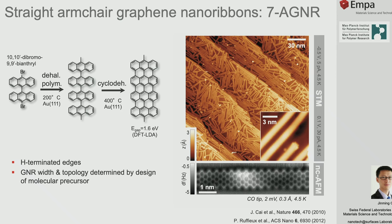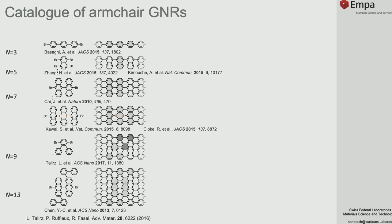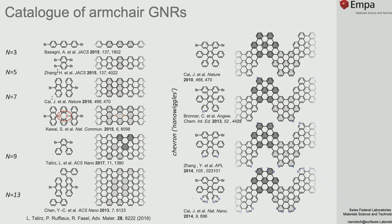After these first results from our laboratory, a huge amount of armchair nanoribbons appeared in the literature from different groups, including precise atomic doping. For example, work by Mike Crommie and Steven Louie on boron inclusion in seven-armchair nanoribbons, and armchair nanoribbons with chevron shapes with atomically precise nitrogen doping, from our laboratory and others. The question then is: can we fabricate devices out of these? To some extent, yes.